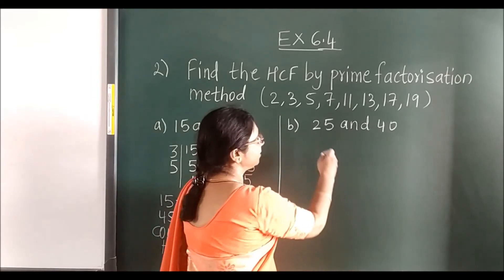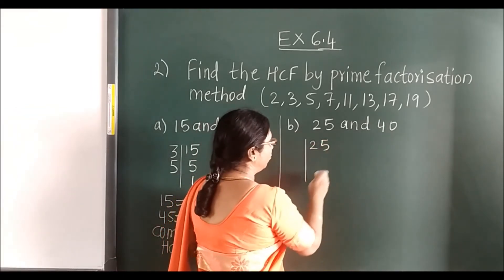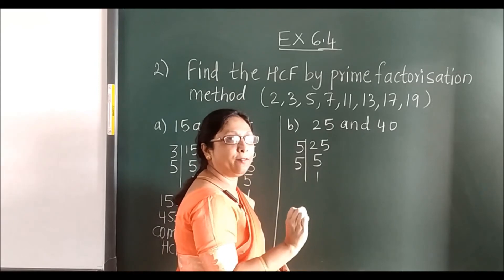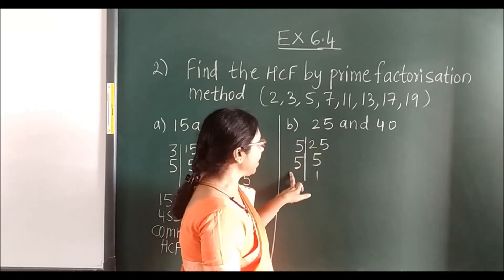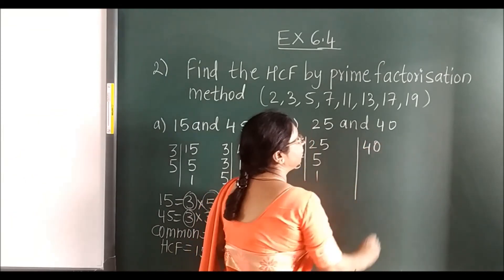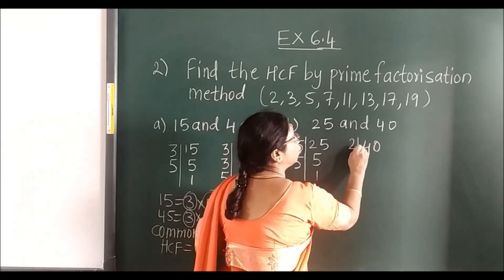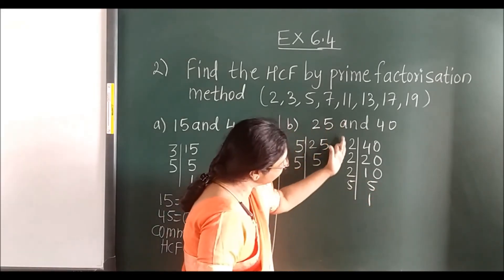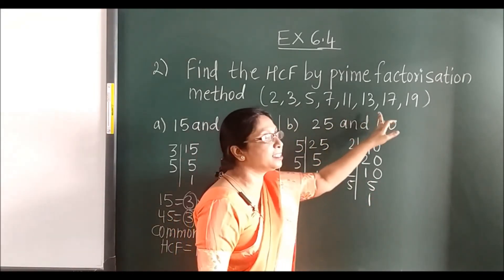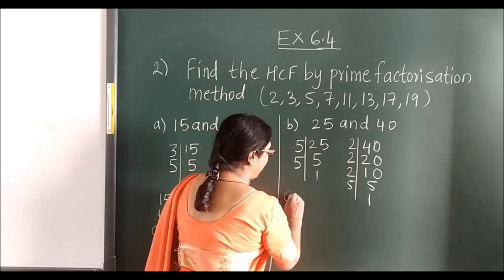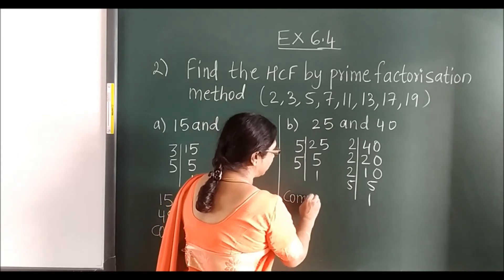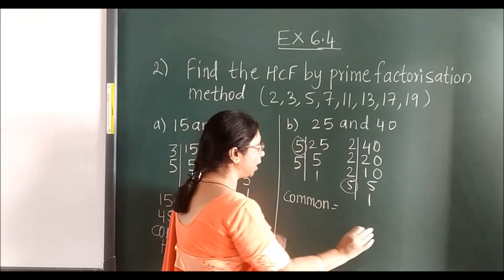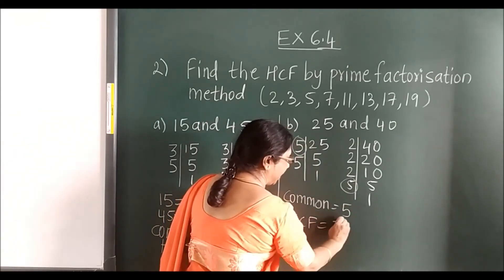For B — 25 and 40. Prime factorization of 25: 5 fives are 25, then 5 ones are 5 — so 5 × 5. Prime factorization of 40: 2 twenties are 40, then 2 tens, then 2 fives, then 5 ones — so 2 × 2 × 2 × 5. The outside numbers are prime. What is common? Only 5 is common. So HCF is 5.